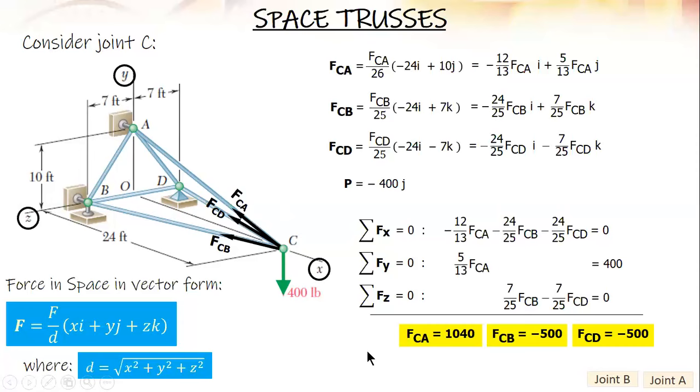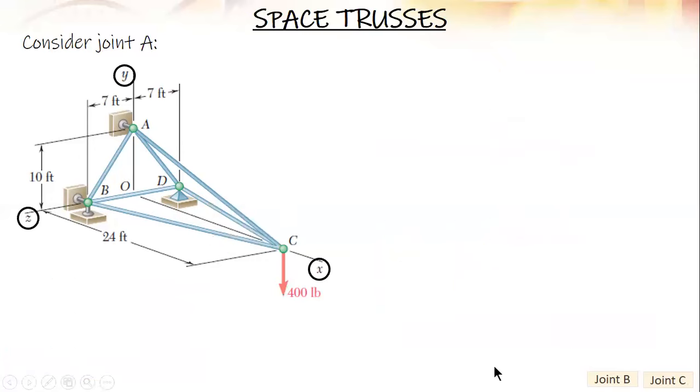Now, I have the value of FCA. At joint A we have these forces: AB. For AB, you start from A and end at B. That would be negative 10J plus 7K. Square root of 10 squared plus 7 squared is square root of 149. Then you simplify or distribute this factor.